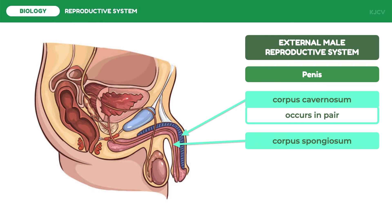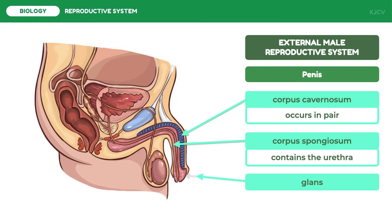The function of the corpus spongiosum in erection is to prevent the urethra from pinching closed, thereby maintaining the urethra as a viable channel for ejaculation. The corpus cavernosum and corpus spongiosum comprise the penis shaft or the body of the penis. Another important part of the penis is the glans penis, which is the head of the penis. The glans penis contains a high concentration of nerve endings, making it the most sensitive part of the penis.